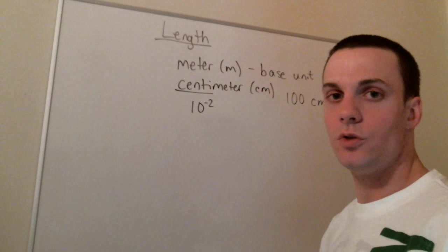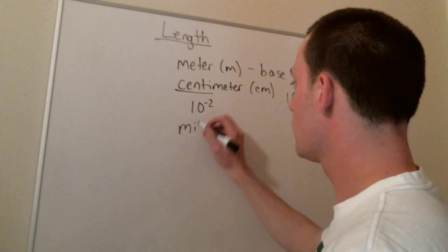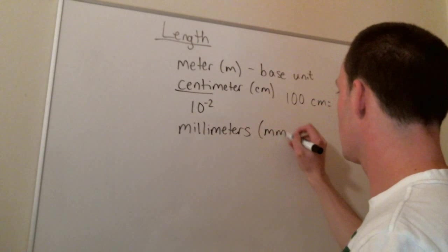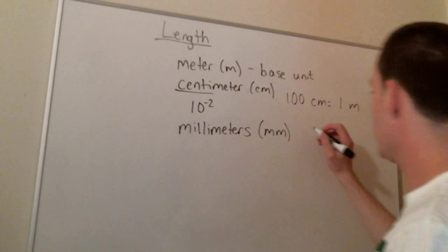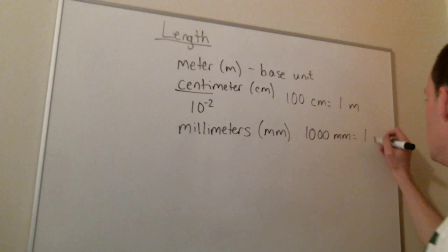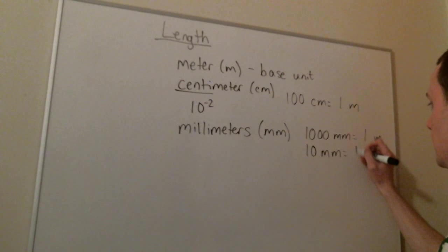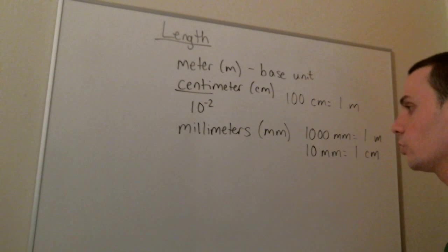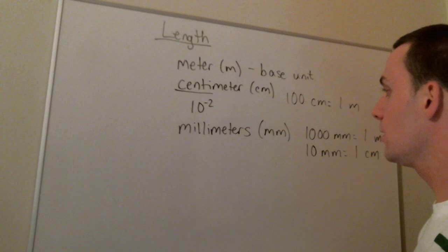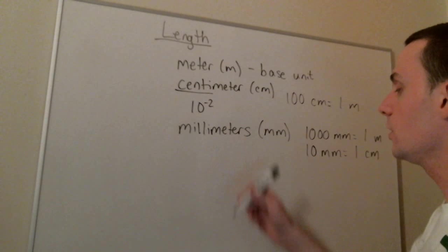We also use millimeters. Again, there's a thousand millimeters in one meter. And there's 10 millimeters in one centimeter. And I'm sure you've commonly seen that on a ruler. You look on a ruler and you have a ruler in centimeters and all the little marks in between each are a millimeter.